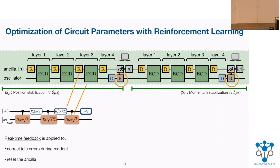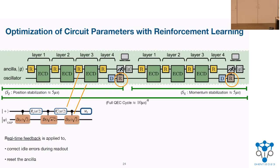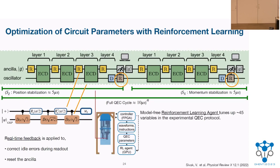The full cycle takes 10 microseconds. This entire circuit has many hidden components to optimize — even within the ECD itself there are many parameters and hidden nonlinearities. There are so many parameters to optimize that it's just not possible for a single human being to do that. But a machine can do it for you — and that's what Vlad did. Using reinforcement learning methods for quantum control experiments, he optimized 45 different experimental variables in this experiment.